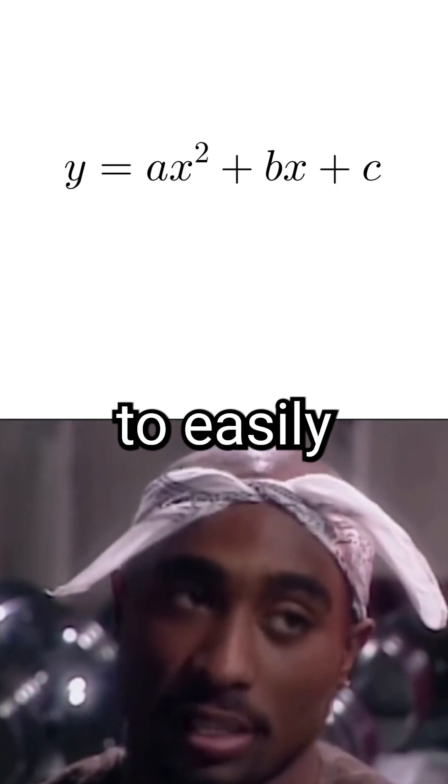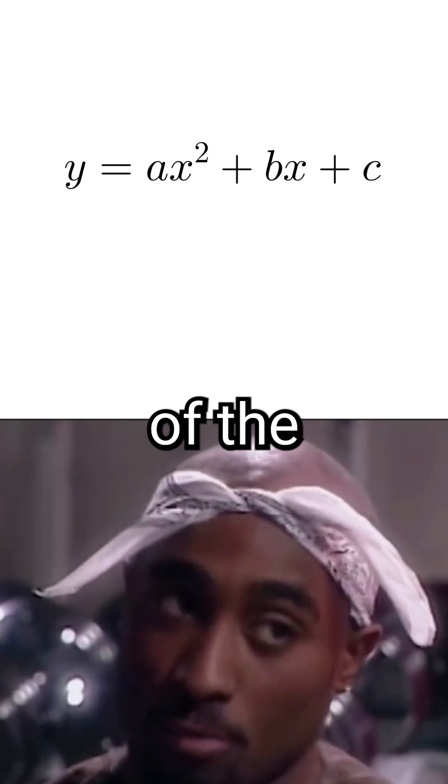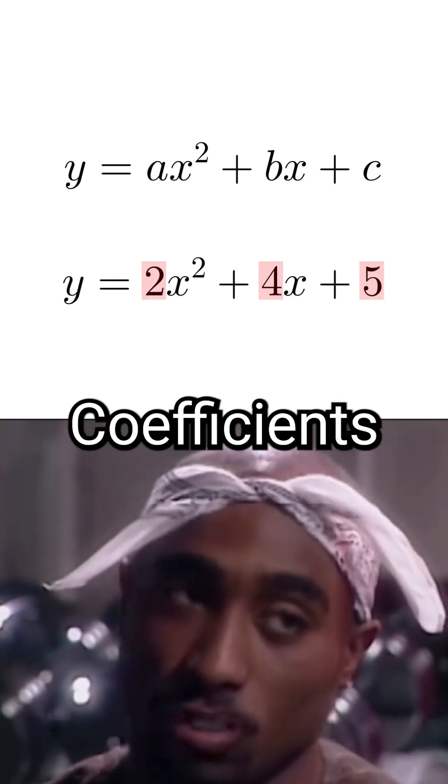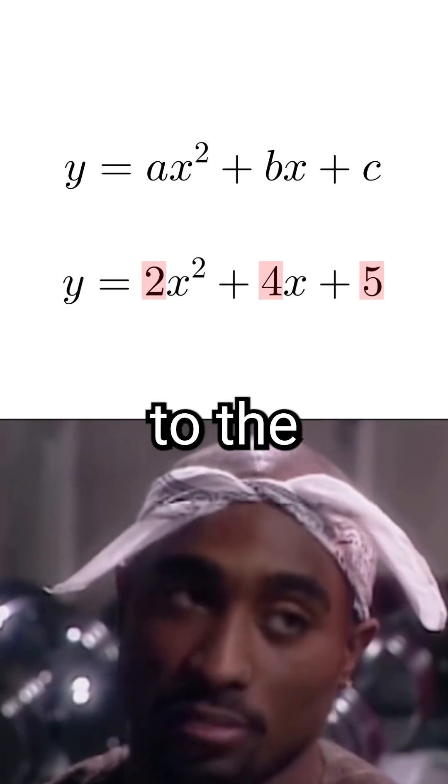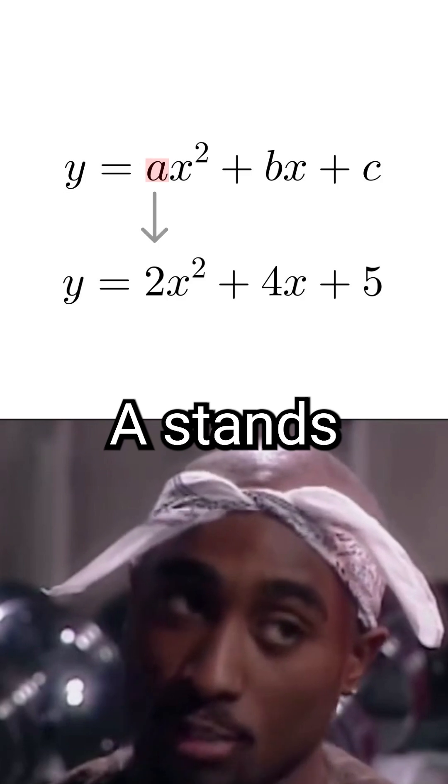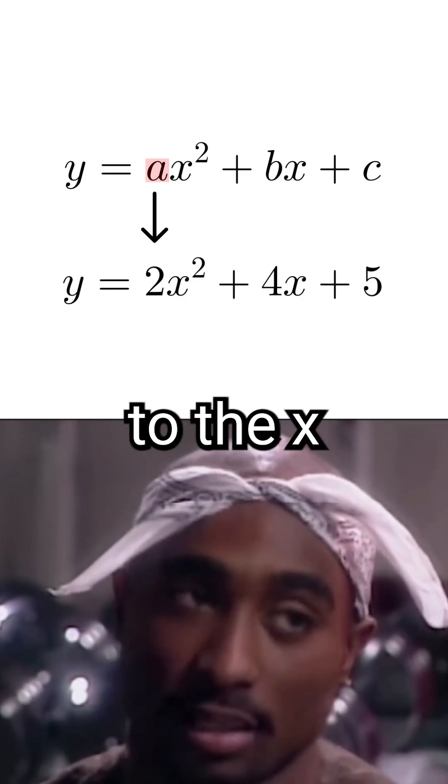Standard form is used to easily determine what the coefficients of the variables are. Coefficients are just the numbers attached to the variables. For example, the a stands for the number attached to the x squared term.